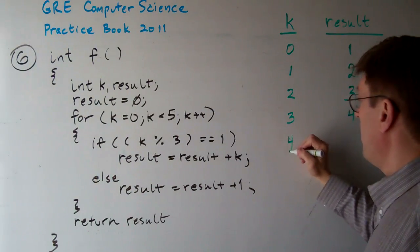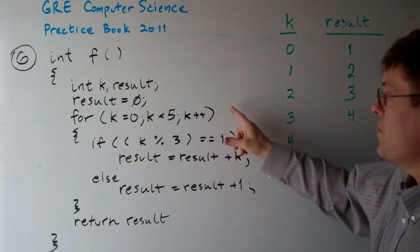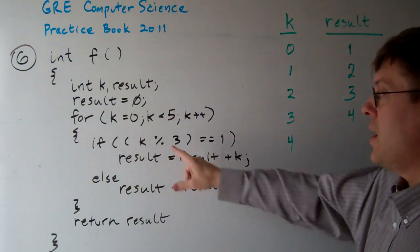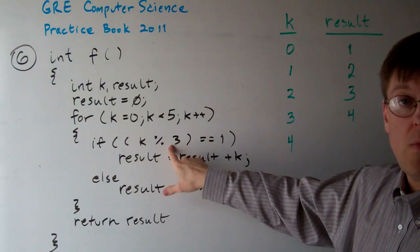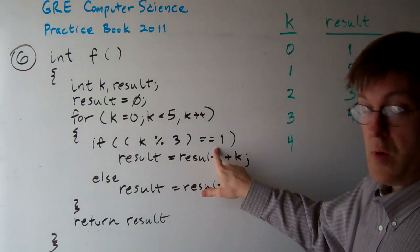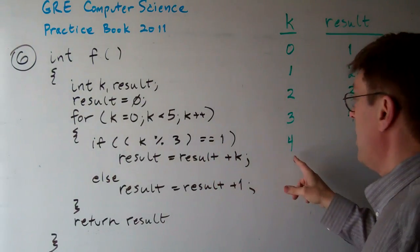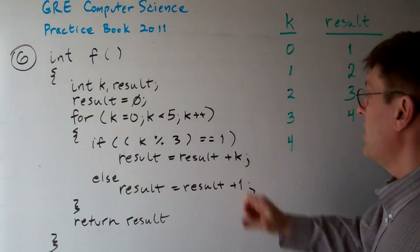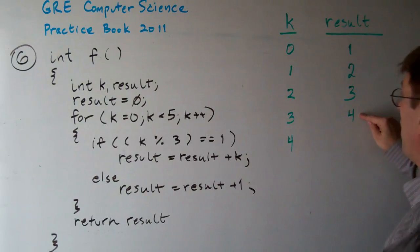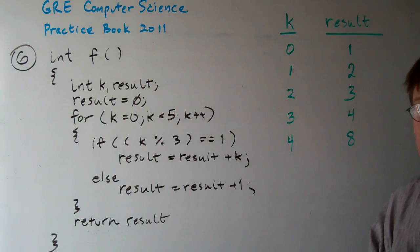Now k equals 4. We've looped. And k mod 3 is 1. Right? Because divide this by 3, the remainder is going to be 1. So the result is result plus k. The result is 4 and k is 4. So the new result is 8.